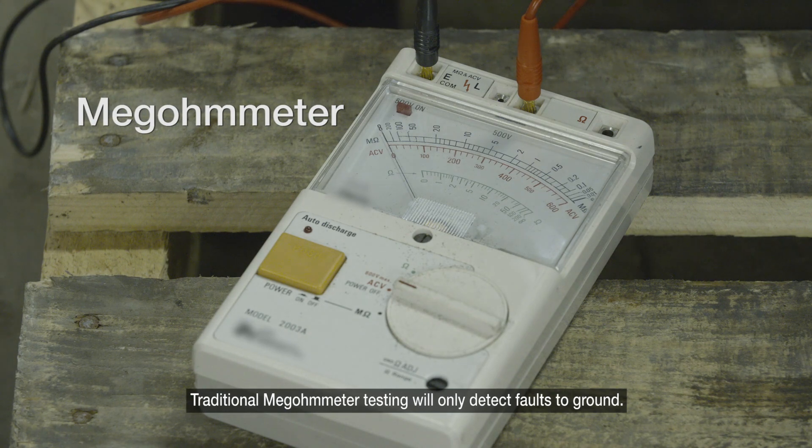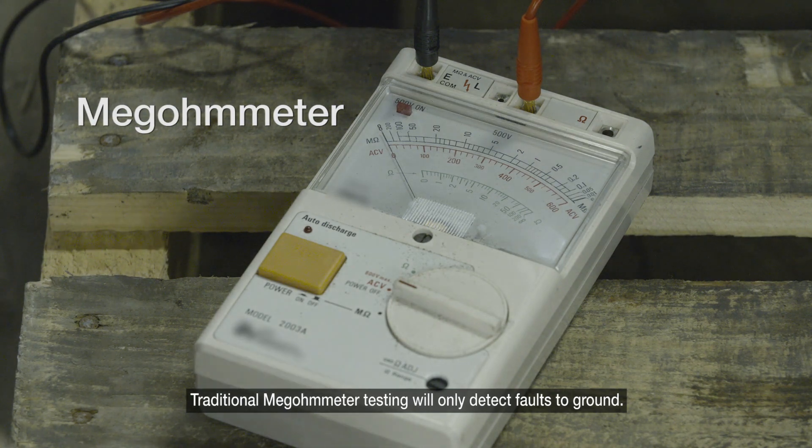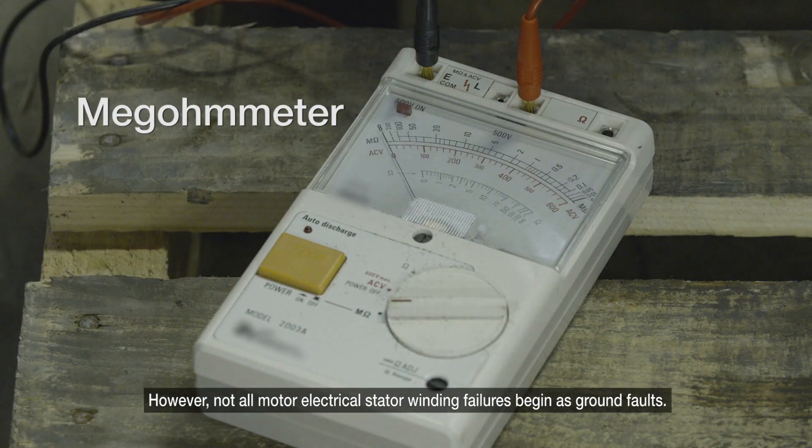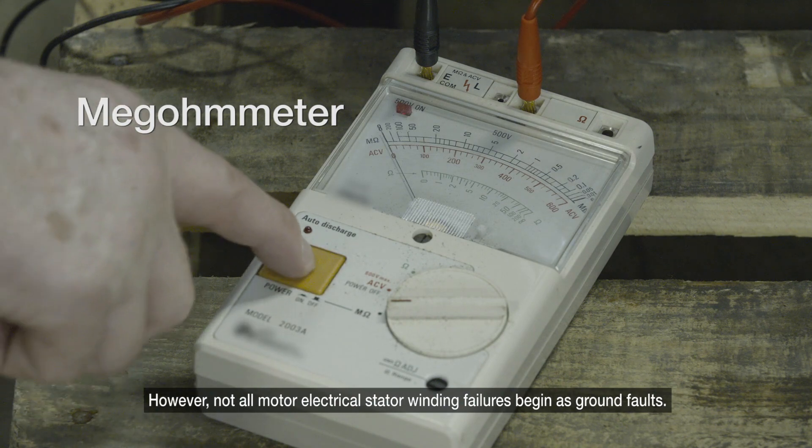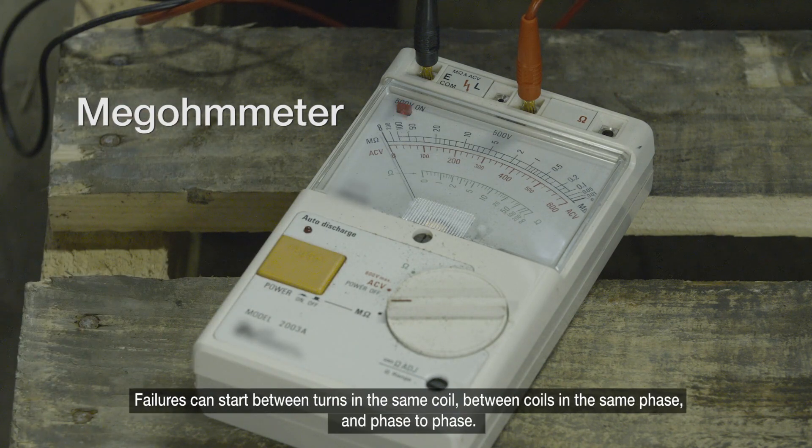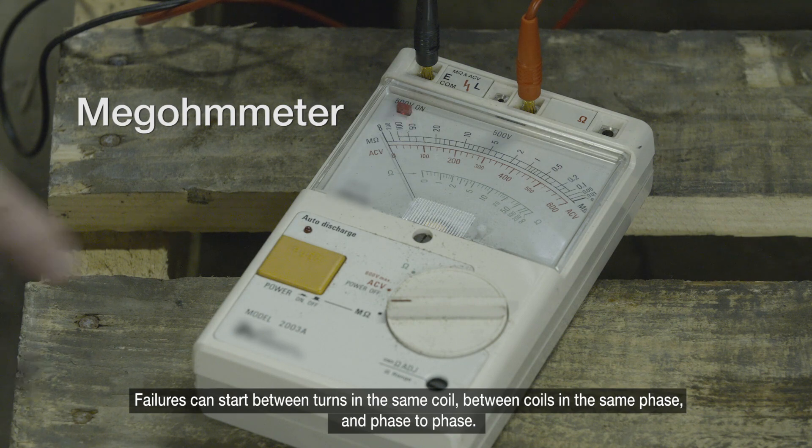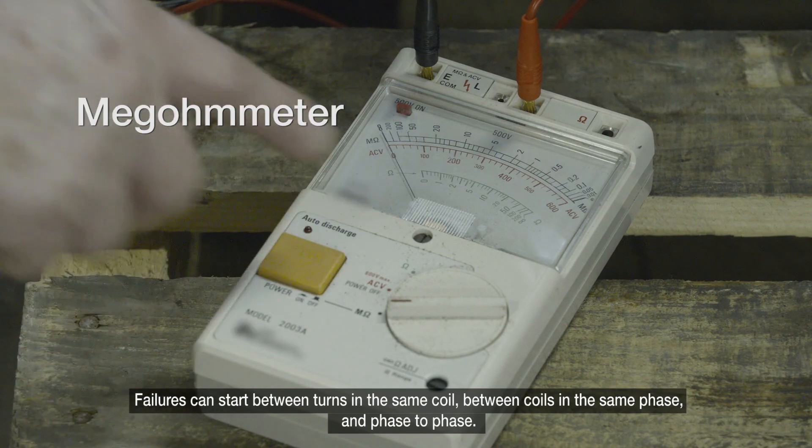Traditional megometer testing will only detect faults to ground. However, not all motor electrical stator winding failures begin as ground faults. Failures can also start between turns in the same coil, between coils in the same phase, and phase to phase.